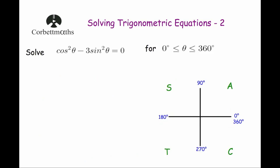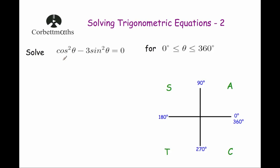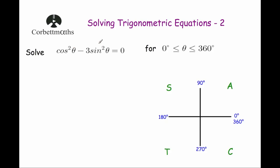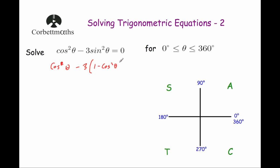Let's look at two more examples using the identity sin squared x plus cos squared x equals 1. Our first example is: solve cos squared θ minus 3 sine squared θ equals zero. Rather than having both cos squared and sine squared terms, we want just one type. We'll replace the sine squared using the identity sine squared θ equals 1 minus cos squared θ, writing cos squared θ minus 3 bracket 1 minus cos squared θ close bracket equals zero.